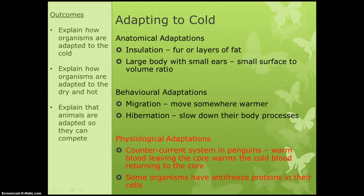Adapting for cold. Anatomical adaptations include insulation — having thick layers of fur or layers of fat, which helps keep the warmth in. Having a large body with small ears gives a small surface to volume ratio. That phrase is one that they very much like: the surface to volume ratio. When it's cold, you want a small surface to volume ratio.